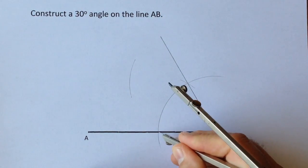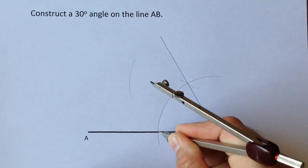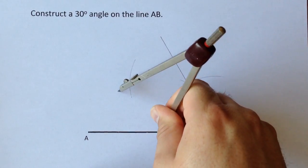Draw another arc and then move it down to where your original arc crosses AB, draw another arc.